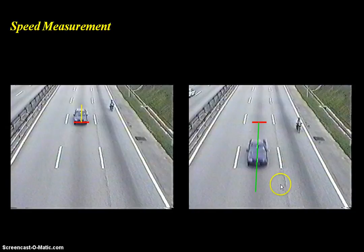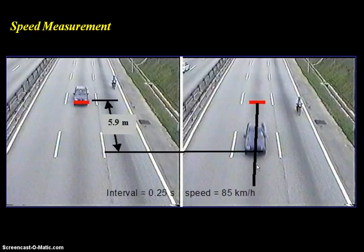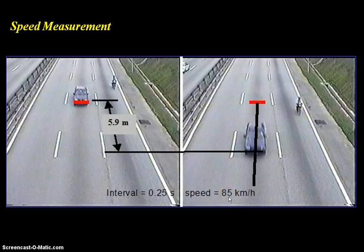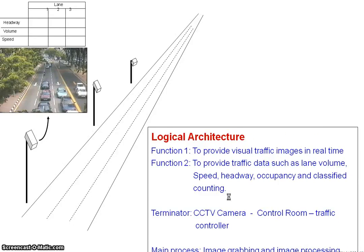For speed measurement, we detect the front edge of a car in one frame and then detect it again a few frames later. In this example the interval is 5 frames apart — since we have 25 frames per second, that is 0.25 seconds. The distance measured is 5.9 meters, so the calculated speed is 85 kilometers per hour.